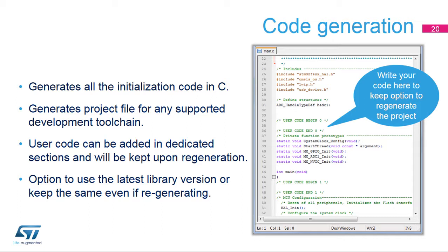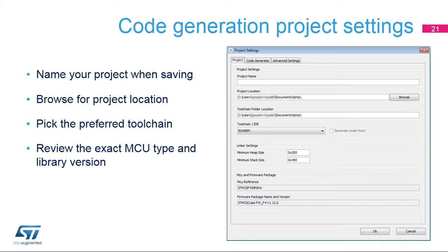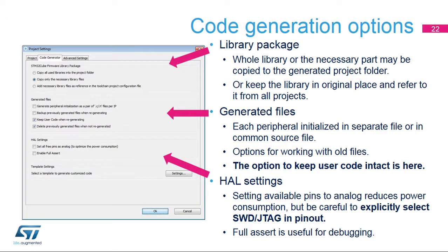This window is available when saving the project. The toolchain folder refers to where the workspace for the toolchain will be placed, not the actual toolchain application location. A limited version of this dialog is also available using the ALT+P shortcut to display project settings. The STM32CubeHAL library may be associated with the project in various ways. Select the copy option if the project should be migrated as a compact package or if there is a need to customize the library code. Keeping the library in the original location makes it easier to share the latest version among several projects.